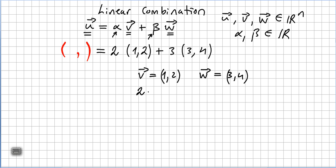So now we are going to do 2 times v and we are going to add that to 3 times w. So 2 times (1,2) plus 3 times (3,4).